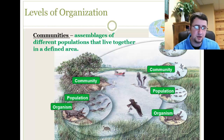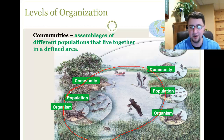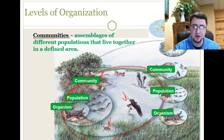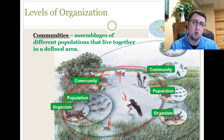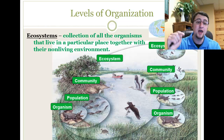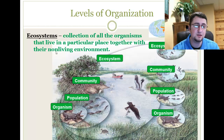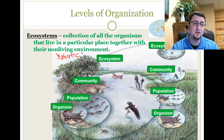Then we have communities. A community is an assemblage of all of the populations that live together in a certain area. So now we're not just talking about alligators, but also turtles, birds, trees, fish, human beings — all different populations of organisms living together. When those populations interact with their non-living environment, that is what we call an ecosystem. So an ecosystem includes all living things interacting with their abiotic, non-living environment.